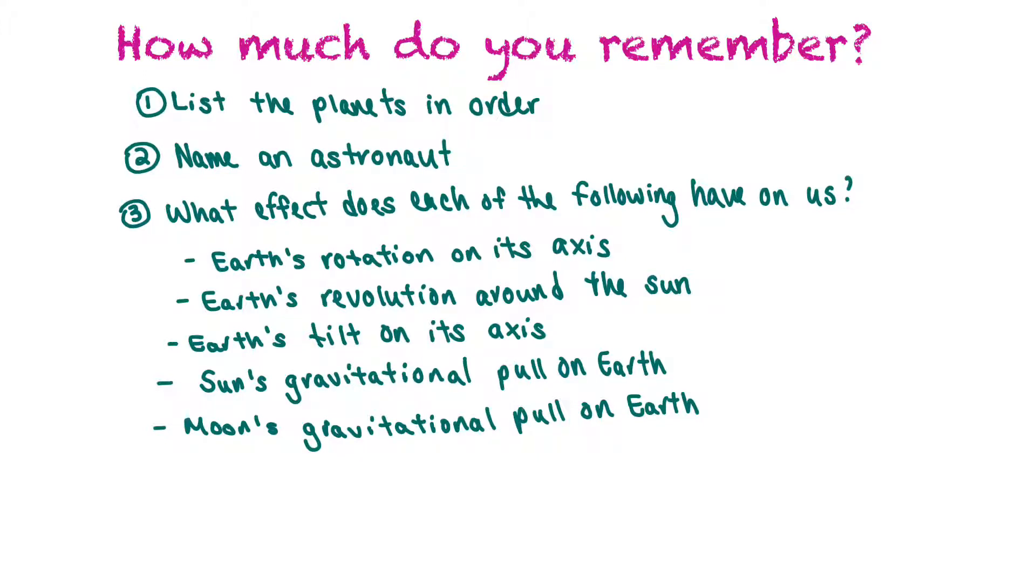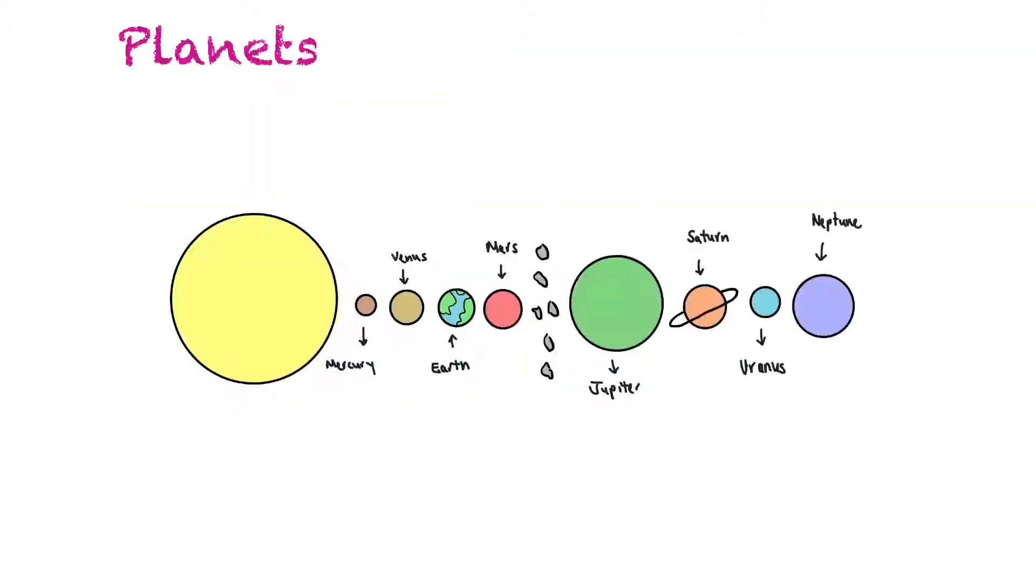So first of all, the planets are in order from the Sun outward: Mercury, Venus, Earth, Mars, and then there's the asteroid belt, and then we have Jupiter, Saturn, Uranus, and Neptune.